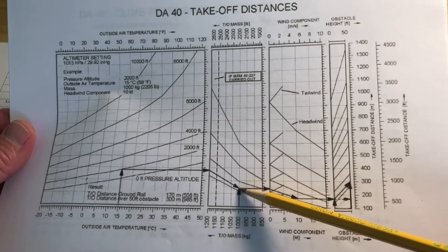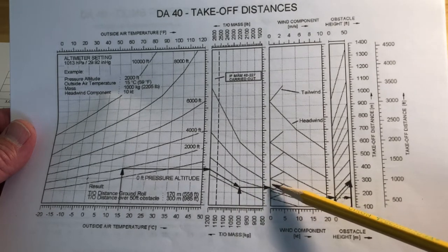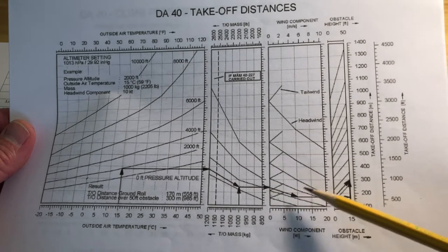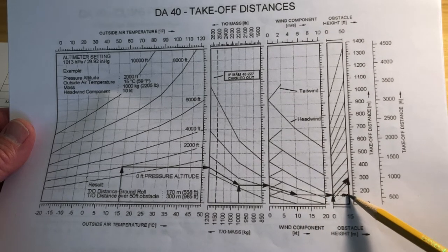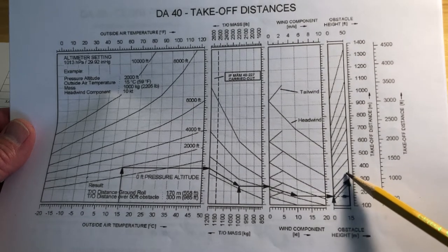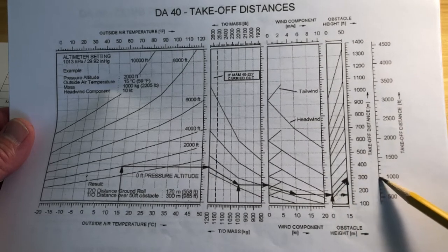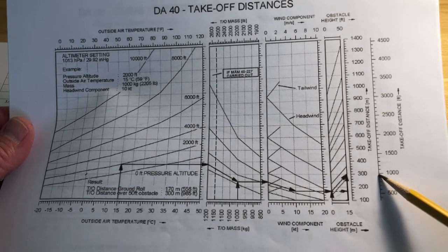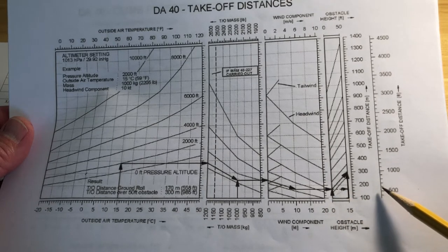Then from there they draw a straight line to the next reference line and follow these lines parallel down until they get to the headwind component of 10 knots. From there they draw a straight line over to the reference line to get their ground roll, and follow these lines parallel up to get the takeoff distance over a 50-foot obstacle — that would be 900 feet, and the takeoff roll would be about 550 feet.